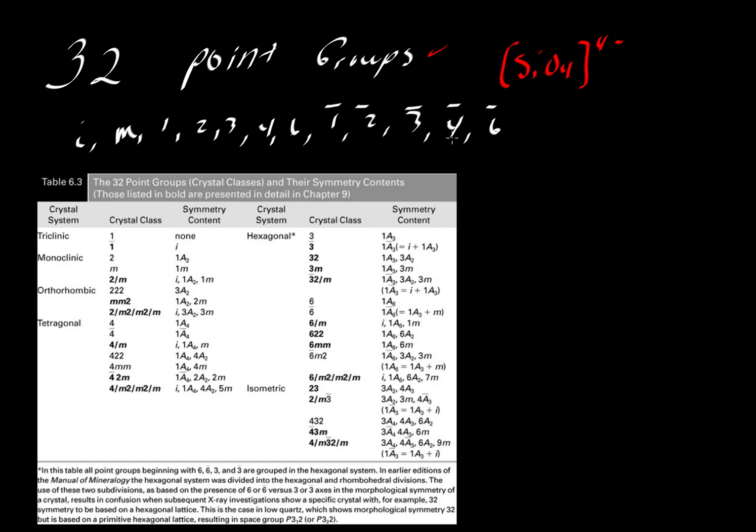That's a lot of symmetry elements. How many different ways could we combine them? If we took all of these symbols and looked at the different ways to combine them, we'd end up with thousands upon thousands of combinations. Most of those combinations are not possible.